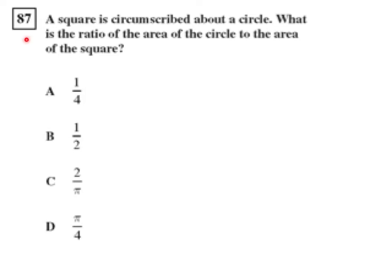Question 87 Geometry CST release test questions. A square is circumscribed about a circle. That means the square is on the outside, the circle is on the inside. What is the ratio of the area of the circle to the area of the square?